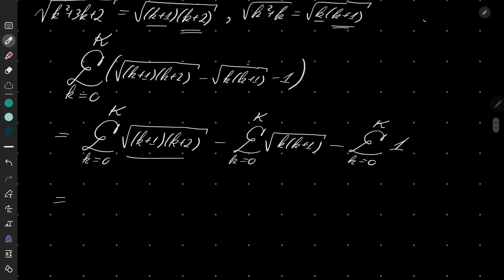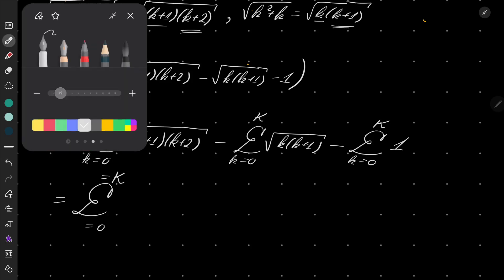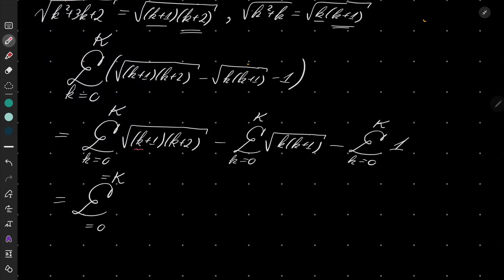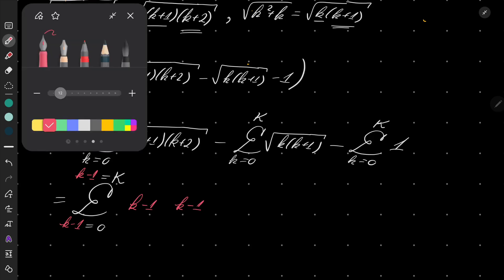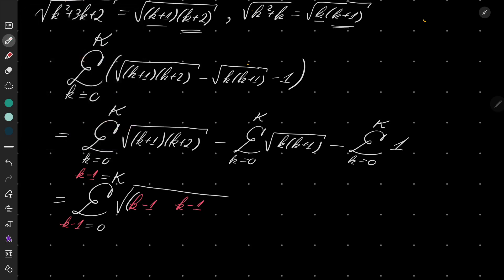And now since these roots are very similar I will shift my index by 1. So instead of k I will put k minus 1. K minus 1 goes from 0 to k, and here I will have k minus 1. The second sum can stay as it is.